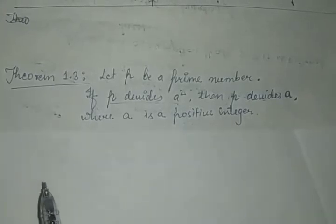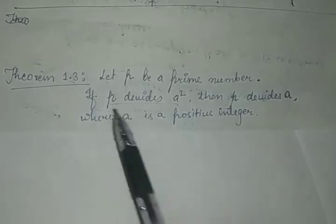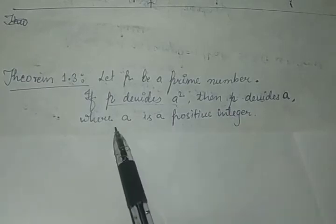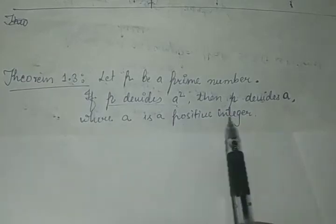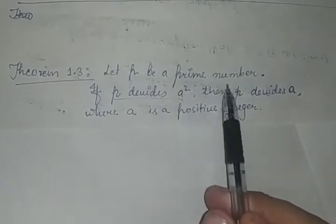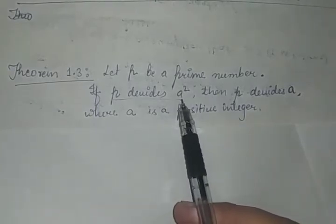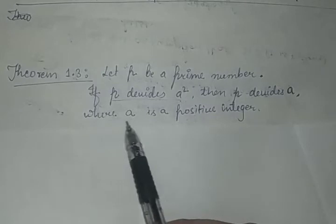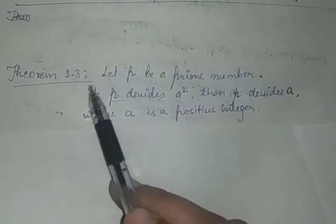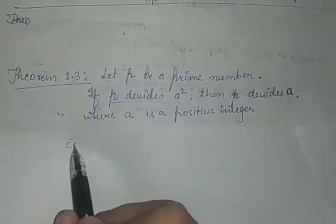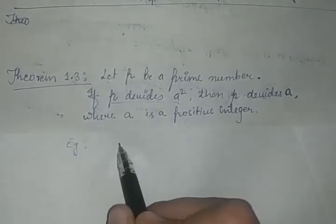Theorem 1.3 states: Let P be a prime number. If P divides A squared, then P divides A, where A is a positive integer. So if P is a prime number and it divides the square of another number, then P also divides that number — this is theorem 1.3.